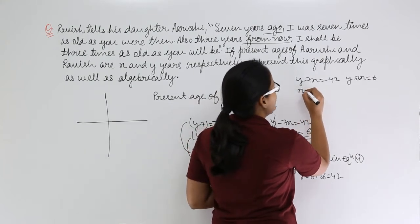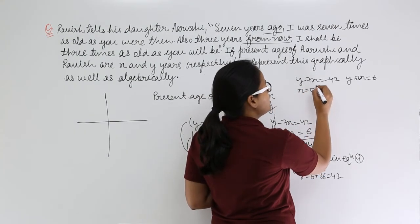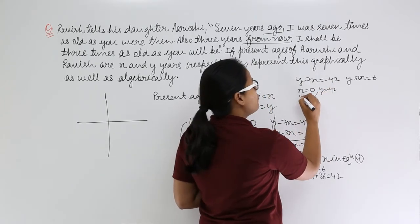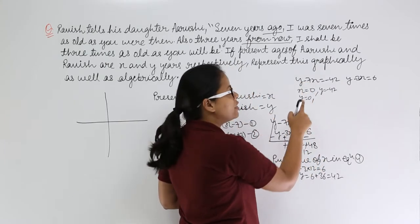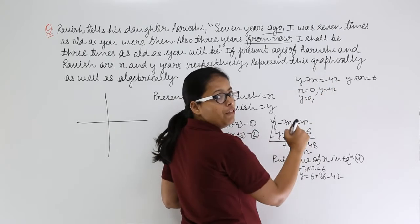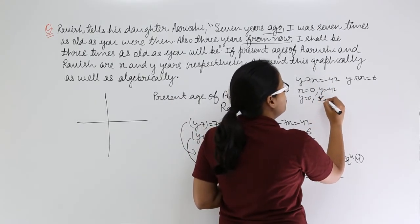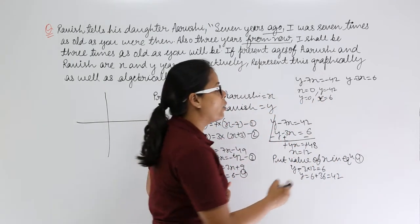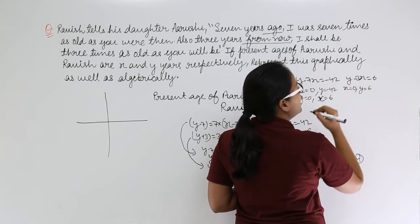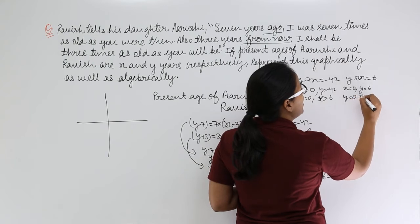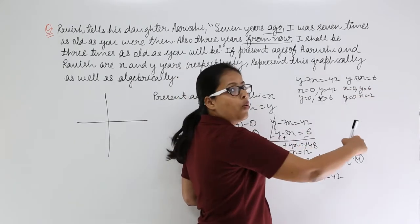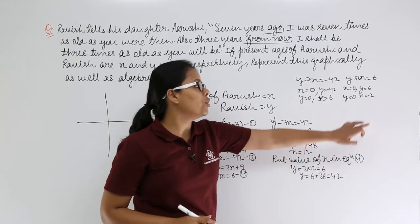For equation three (y minus seven x equals minus forty-two): when x equals zero, y equals minus forty-two; and when y equals zero, x equals six. For equation four (y minus three x equals six): when x equals zero, y equals six; and when y equals zero, x equals minus two.